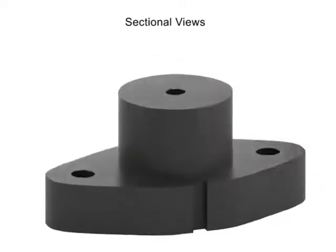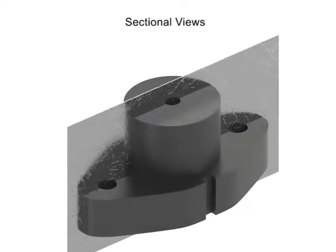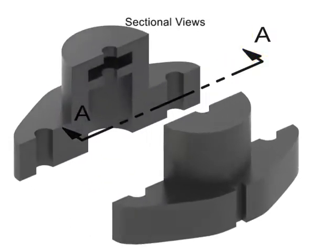A sectional view is made through an outside view. To make the section, imagine a plane cutting through the part. The cutting plane is indicated by a line with arrows called a cutting plane line. The arrows on each end indicate the direction you view after the cut is made and are typically labeled with letters that identify the new view.